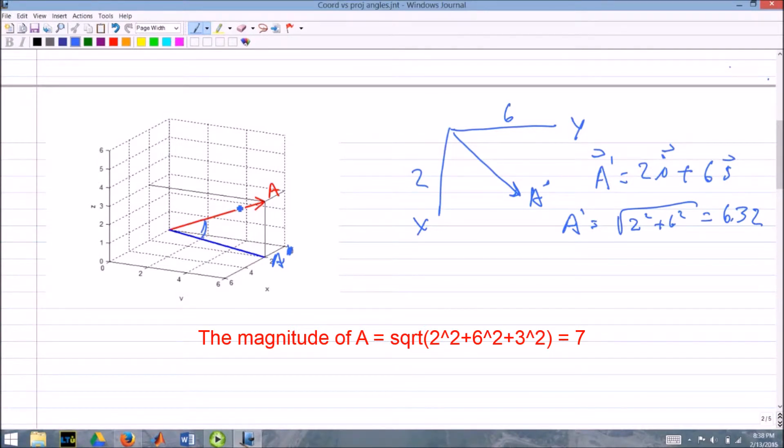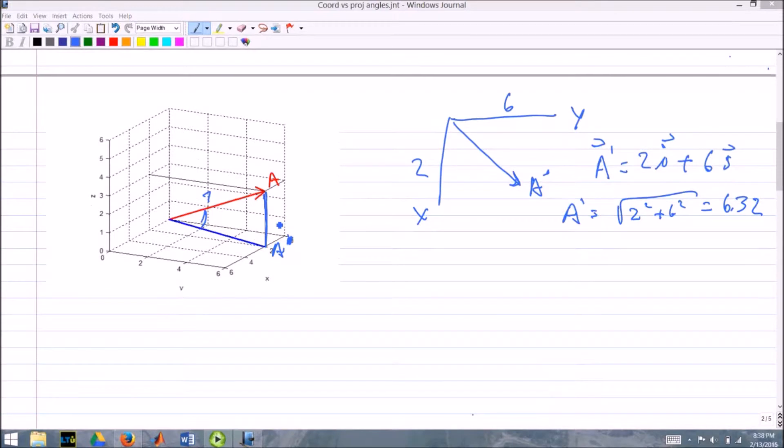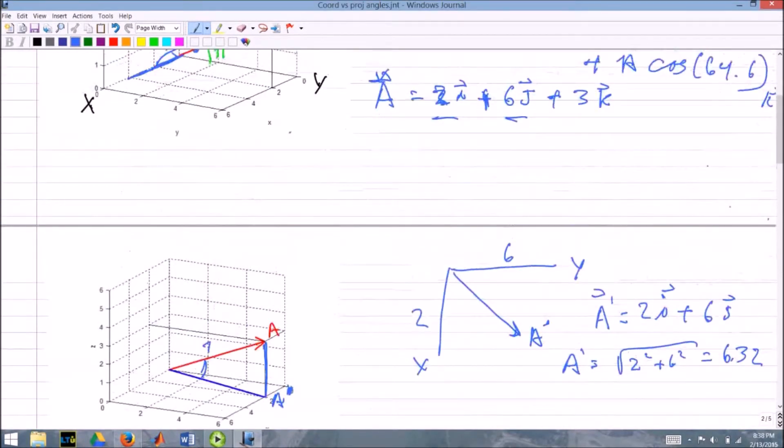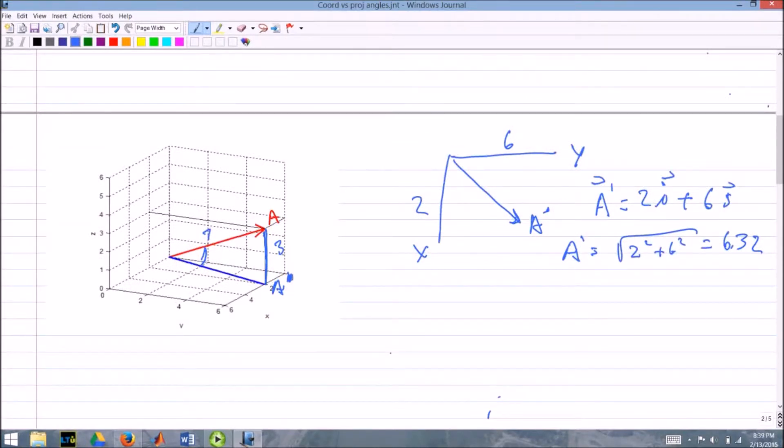I also know that if I look at the angle between A and A prime, I have the length of the hypotenuse, which is our vector of 7, and I have the z direction magnitude of 3. I can find the angle between the vector and the xy plane. I'll call that theta z. That's equal to the inverse sine of the opposite side 3 over the hypotenuse 7, which equals 25.4 degrees.